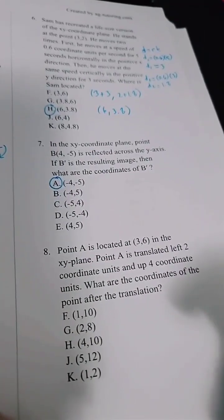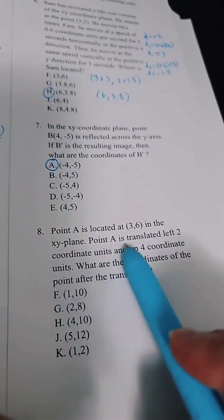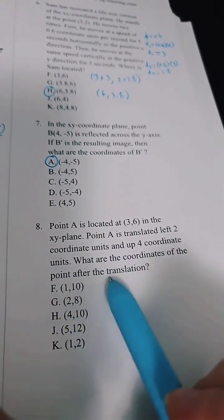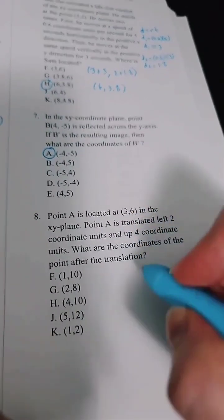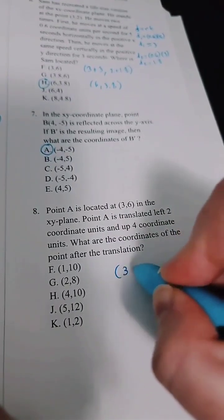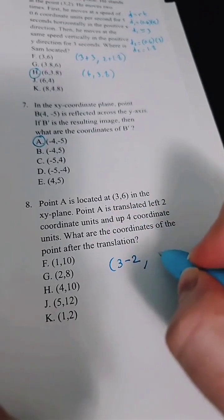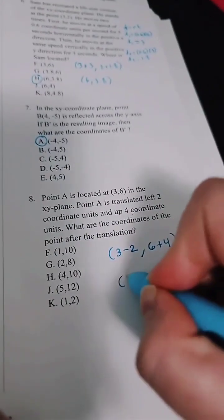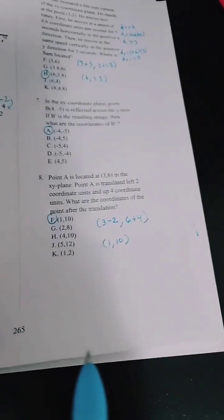For number eight, point A is at (3, 6) in the xy-plane. It's translated left two coordinate units and up four coordinate units. Going left by two means we do 3 minus 2 = 1. Going up four units means we start at 6 and add four, giving 10. So the new coordinates are (1, 10), which is answer F.